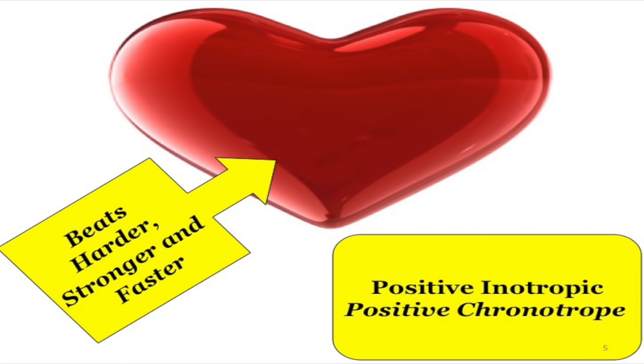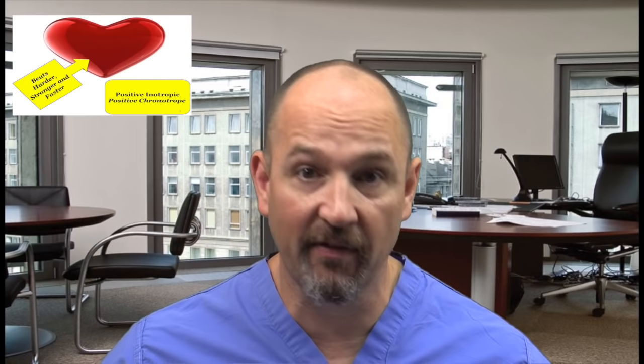You have to know the terms chronotrope and inotrope viscerally. Chronotrope relates to chronology — time. A positive chronotrope makes the heart go faster; atropine is a positive chronotrope. A negative chronotrope makes the heart go slower — beta blockers, calcium channel blockers, and digoxin are negative chronotropes. Inotrope means force of contraction. A positive inotrope makes the heartbeat harder; digoxin is a positive inotrope. A negative inotrope makes the heartbeat weaker. A beta blocker is also a negative chronotrope. You have to know those terms.